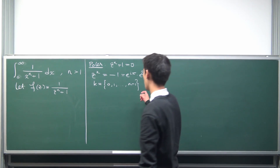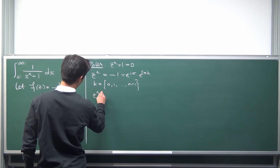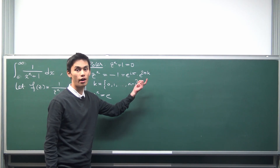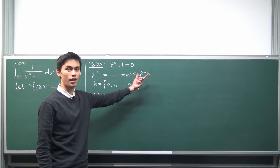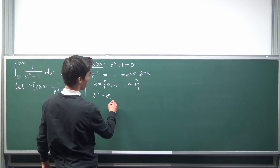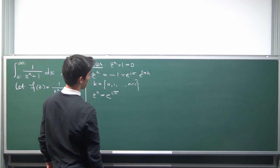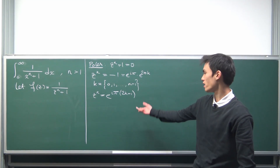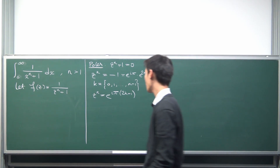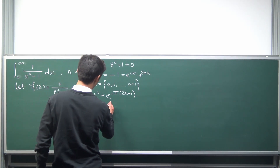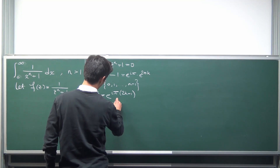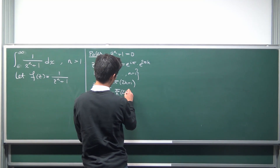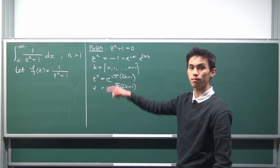Taking the nth roots on both sides, we recover our solution for z: it's going to be e to the i times pi over n times the quantity 2k plus one. These are basically all the poles of our function f of z, and they correspond to odd multiples of pi over n in the exponent.